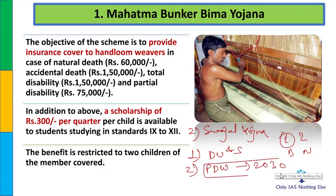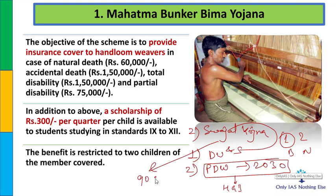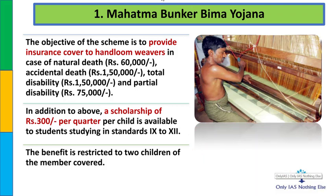बिल्कुल सही जवाब - केवल पहला statement correct है. क्योंकि हर घर जल के अंदर में था वो objective. Swajal Yojana तो community owned pipe drinking water facility provide करना था, जो solar energy से चलता था. Funding ratio 90:10 था - 10% community देती थी, management का काम भी community देखती थी. Employment generation और community को pipe water पहुँचाना, हर household नहीं. तो ये quick revision हो गया last lecture से.